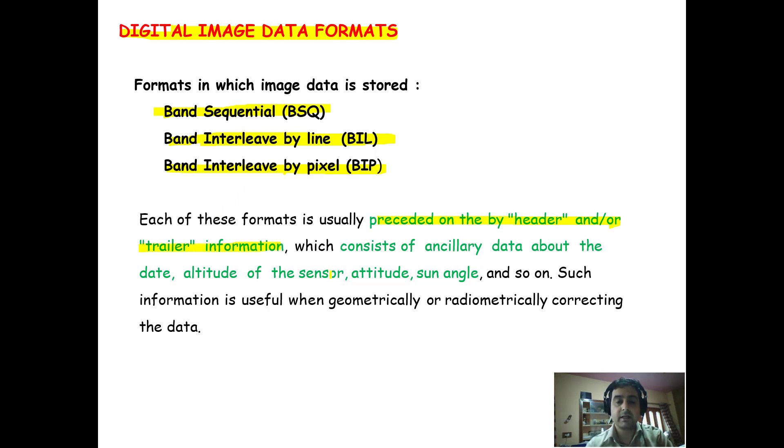Each of these formats is usually preceded by header or trailer information which gives you some information about the ancillary data, such as date of capture of the image, altitude of the sensor when the image was captured, attitude, sun angle. These things are required when you are geometrically or radiometrically correcting the data.